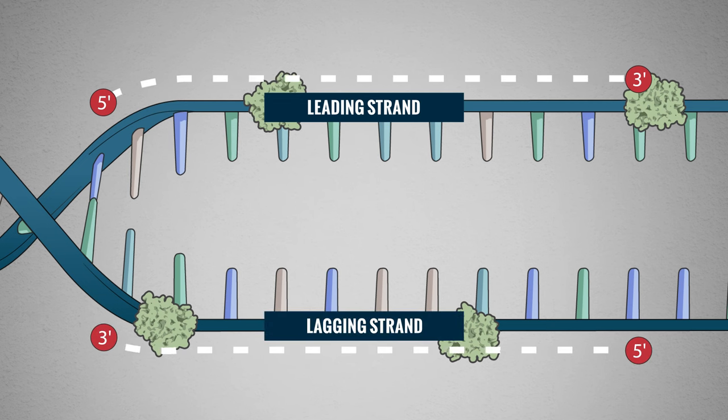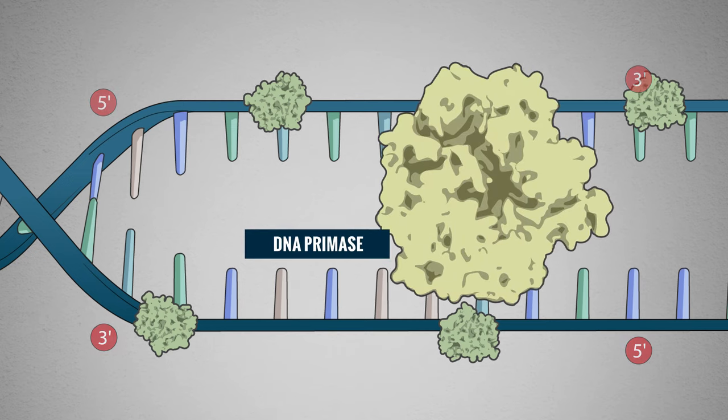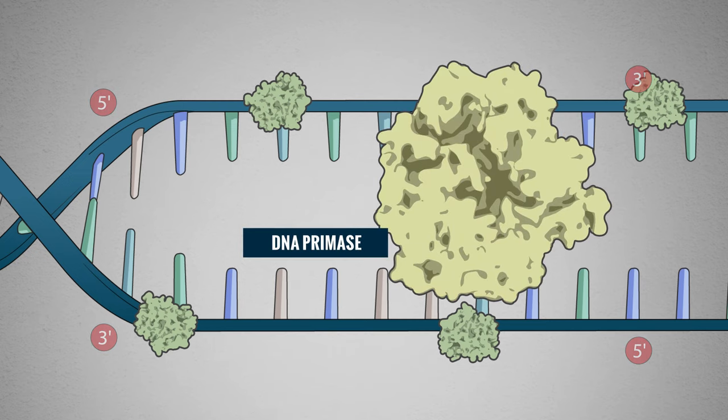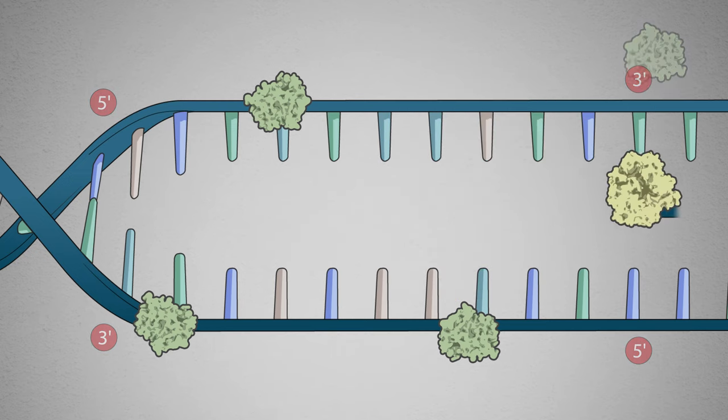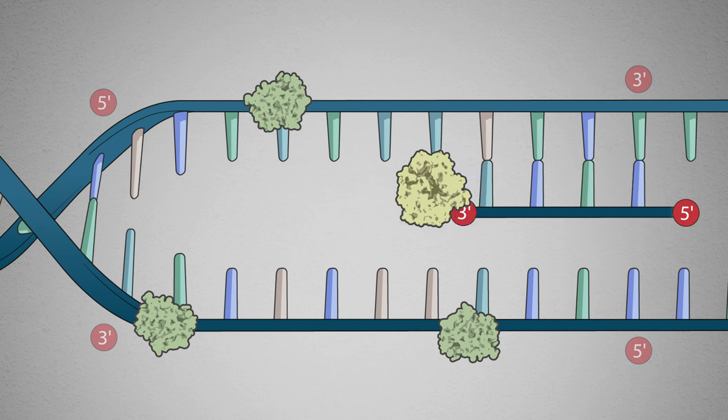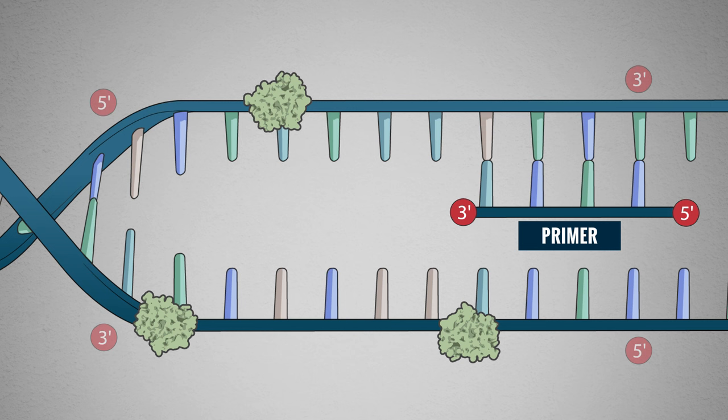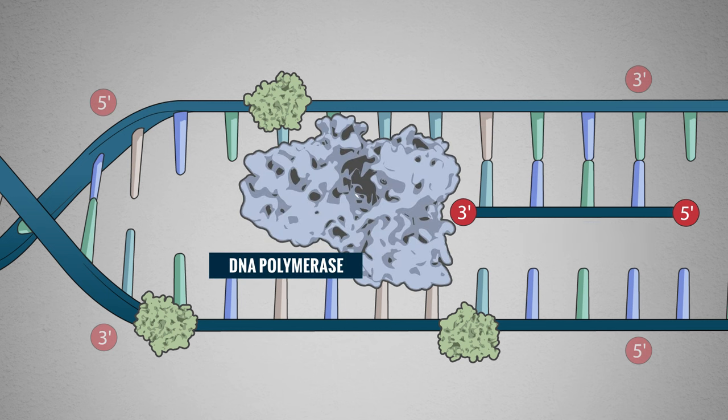To give DNA polymerase a place to start, an enzyme called DNA primase first copies a short stretch of the DNA strand, creating a complementary RNA segment called a primer. Using this primer, DNA polymerase can now copy the DNA strand.